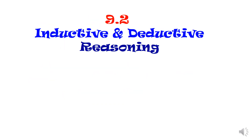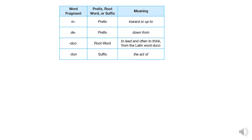Inductive and deductive reasoning. The prefix "in" means toward or up to, and "de" means down from. So inductive reasoning leads you up to a conclusion, while deductive reasoning works down from a rule. Both share the root meaning to lead and to think, and "tion" is the act of.